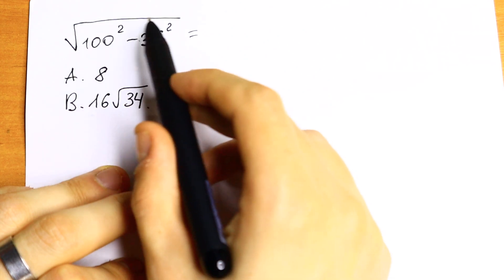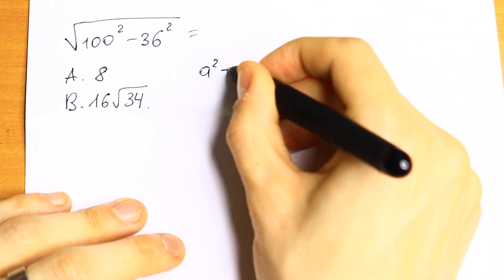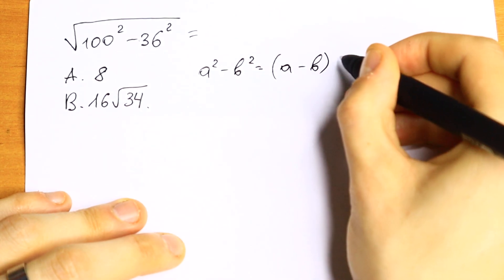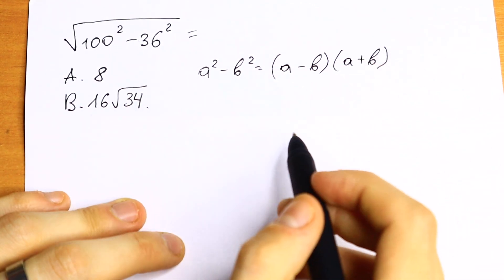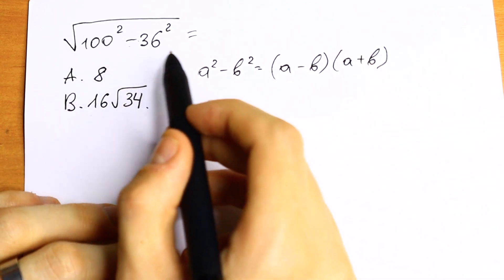First of all we have difference of squares, so we need to know the formula. If we have a squared minus b squared, we can write it as a minus b times a plus b. So this is our formula, and moreover we have difference of squares in our radical sign.